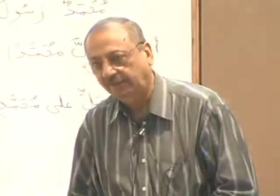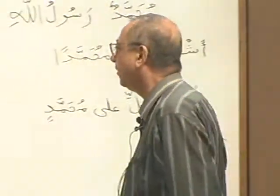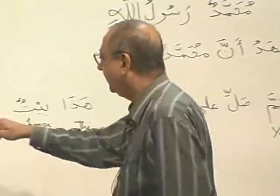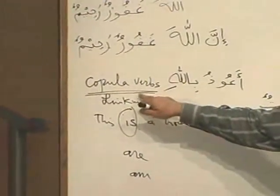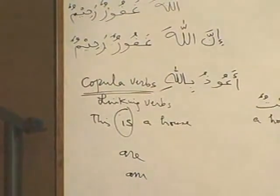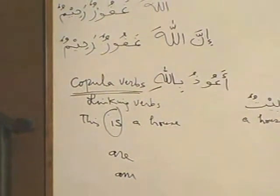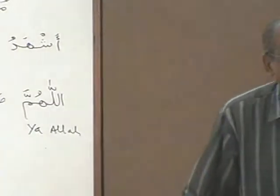What are 'is,' 'am,' and 'are' called in English grammar? Copula verbs. So in Arabic there is no linking word — it is understood to be there, but it's not written.